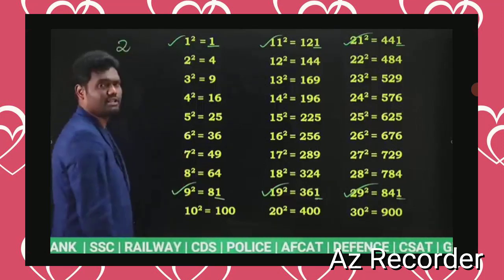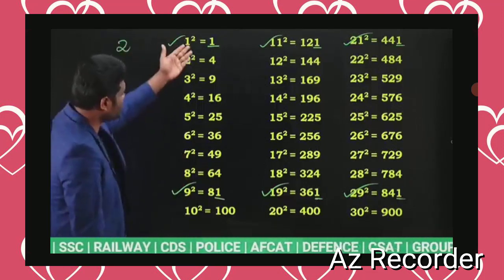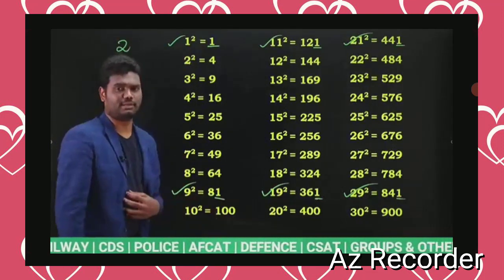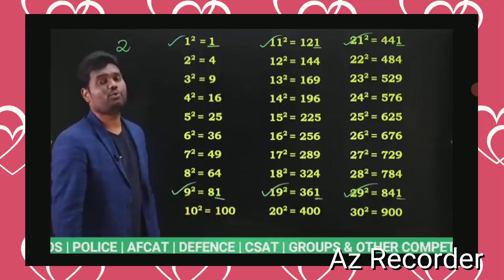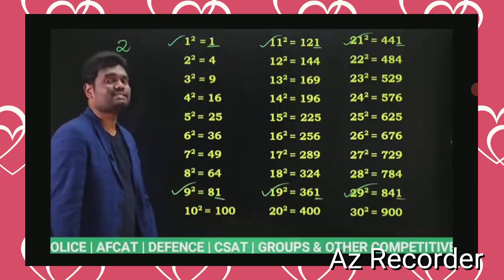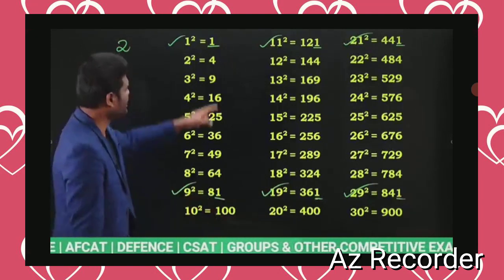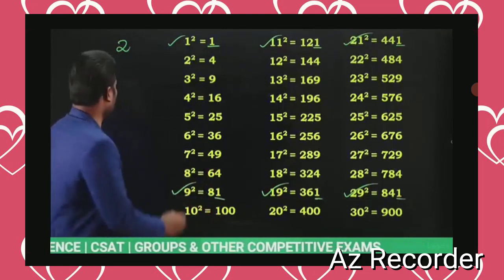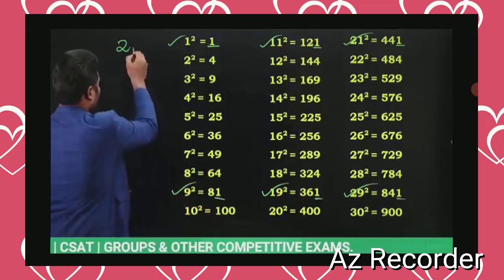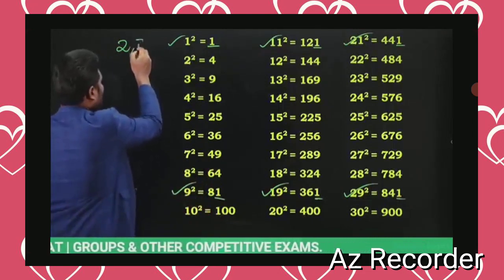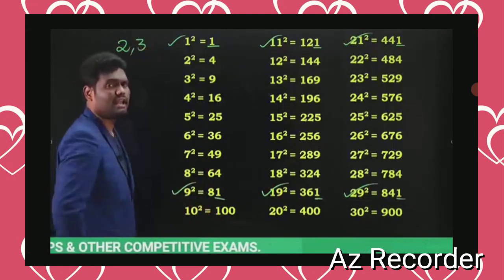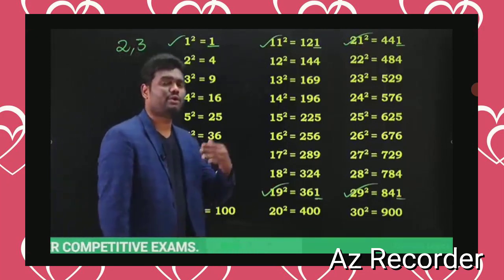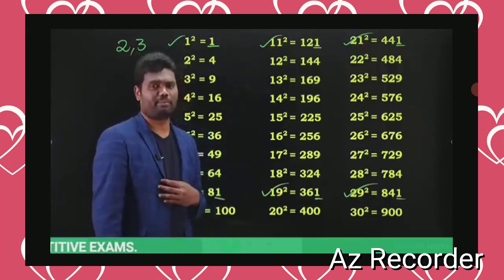You never get 2 as the last digit of a perfect square — you can check. Similarly, you will not get 3 as the last digit either. So whenever you are trying to calculate the perfect square of a number, 2 and 3 will never appear as the last digit.